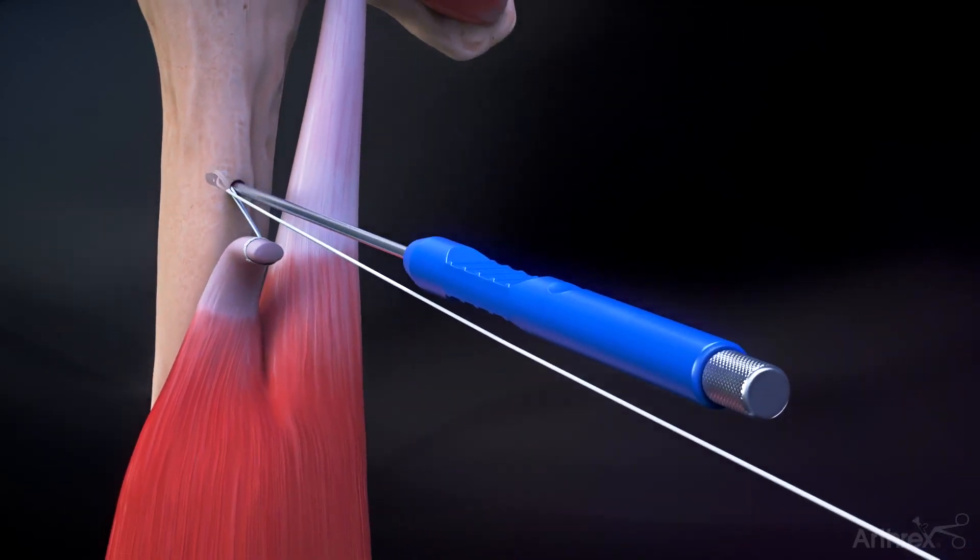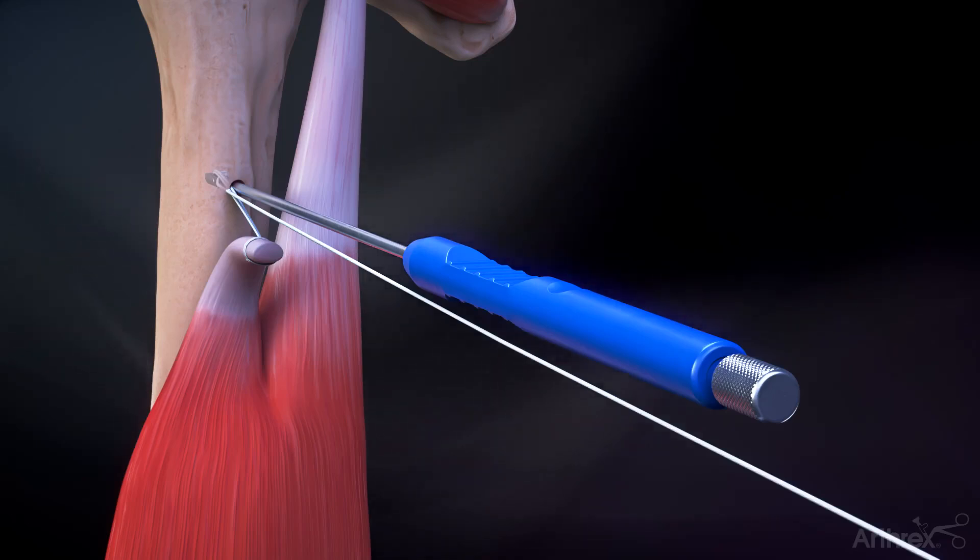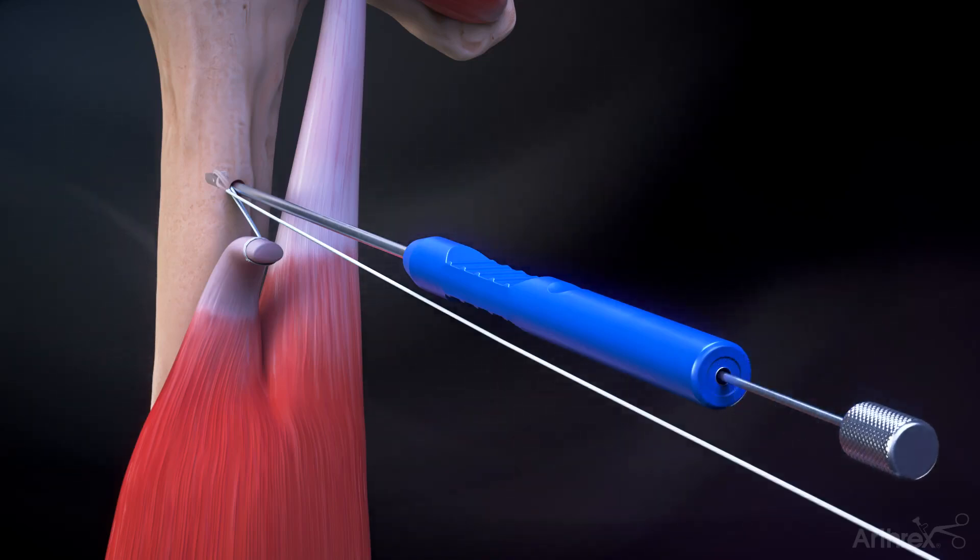Insert the button into the tunnel. Turn the threaded inserter counterclockwise to release the button. Remove the threaded inserter.